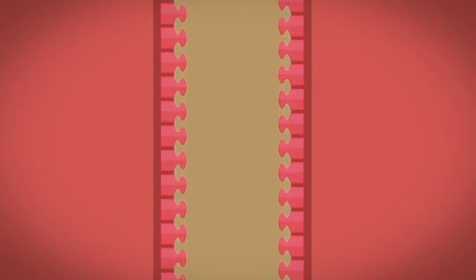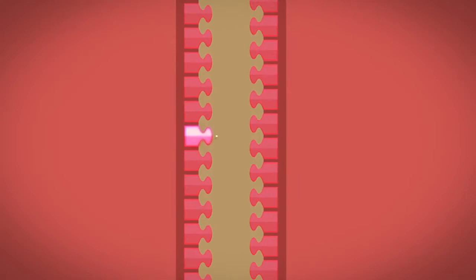Each side of the zip has a row of teeth with gaps in between. When the two sides of the zip are lined up, the teeth on one side are opposite the gaps on the other side.